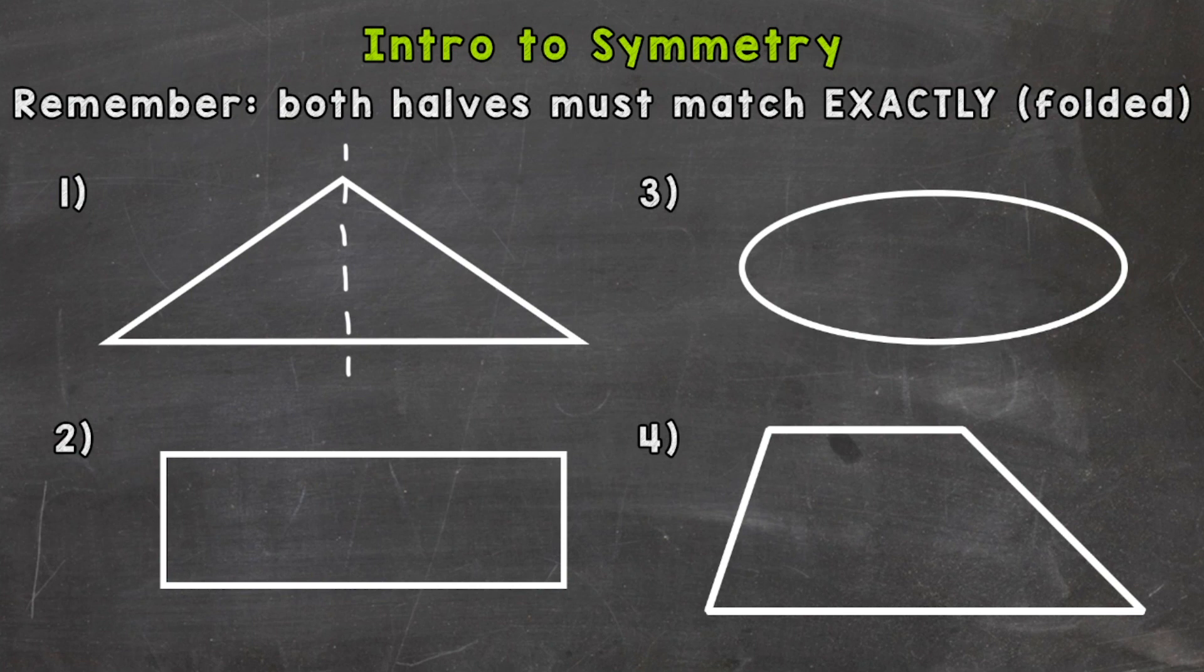Some shapes have multiple lines of symmetry like number two. Let's jump to number two here. We can fold this shape along a line of symmetry going vertically, so up and down, and both halves would match exactly.